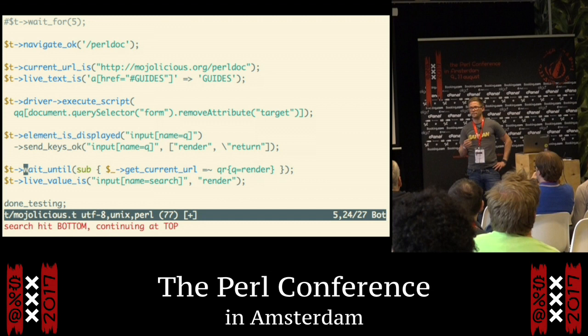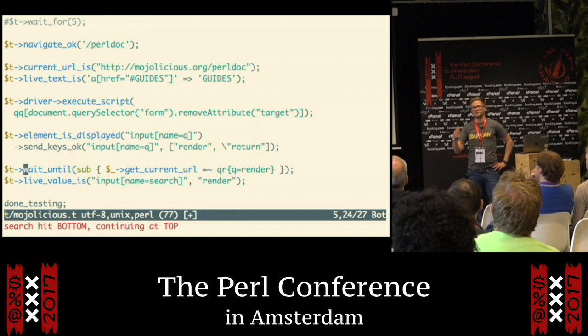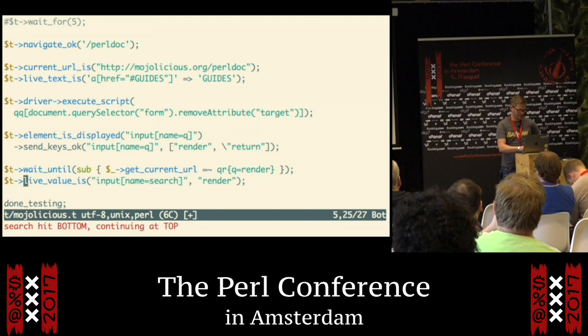This is instead of doing sleep for two seconds, which could be a pretty bad thing to do if the network is slow. Using wait_until, you will actually just sit there and wait until the state is changed. Then on the next page we check if the input field has the 'render' value that we entered on the previous page.